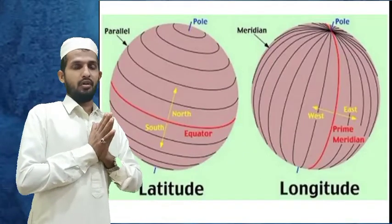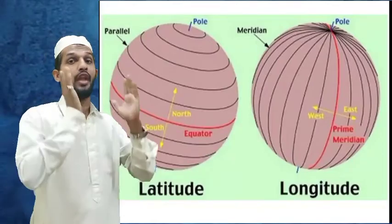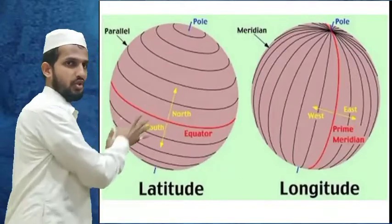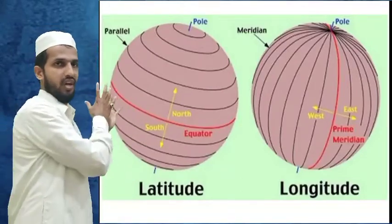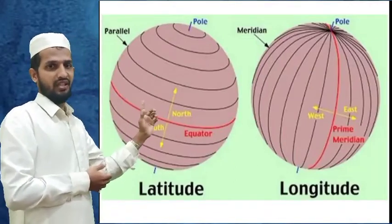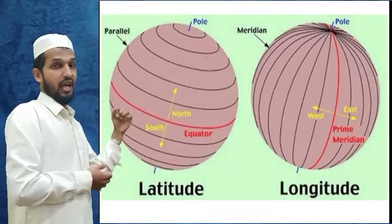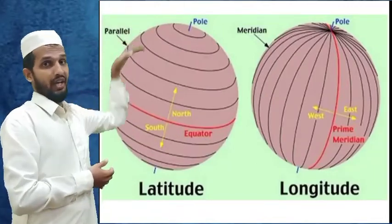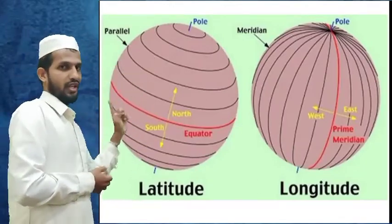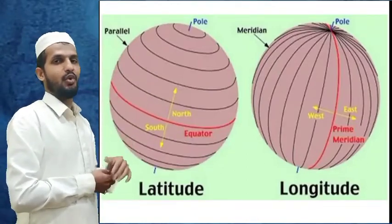Before studying the map, we want to know about latitude and longitude — what is latitude and what is longitude? In this picture, we display one as latitude and one as longitude. For latitude, you can see the rounds — it is parallel to the equator, the central red line. It moves north and south, parallel to the equator. This is called latitude.